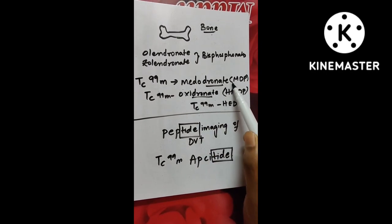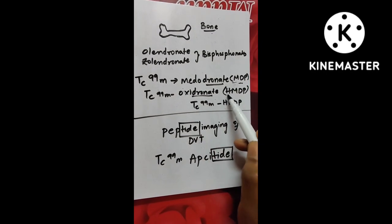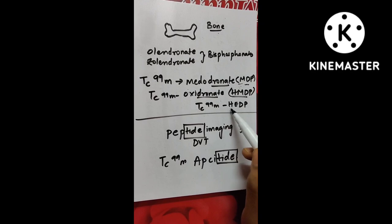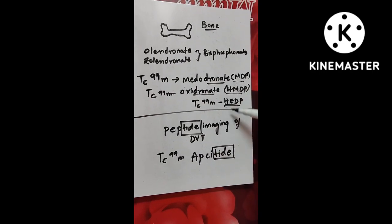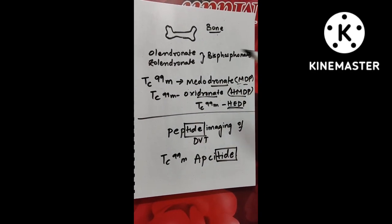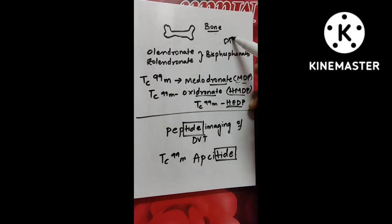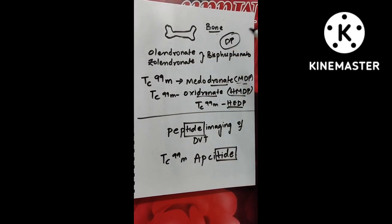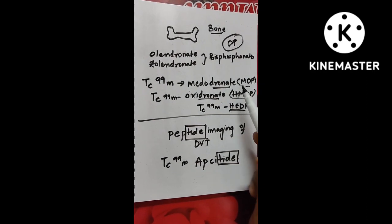So medodronate is MDP. Medodronate is MDP and oxydronate is HMDP. Technetium-99M HEDP. All these DP things are for bones. So this is the DP of your bone, display picture of your bone. Remember it like that. So this is a display picture: HEDP, HMDP and MDP.